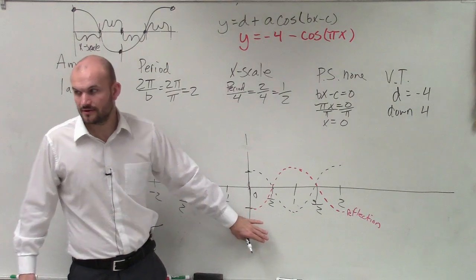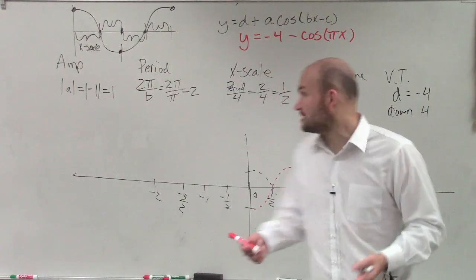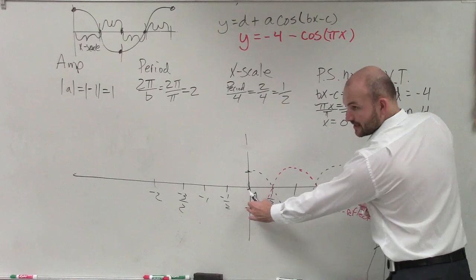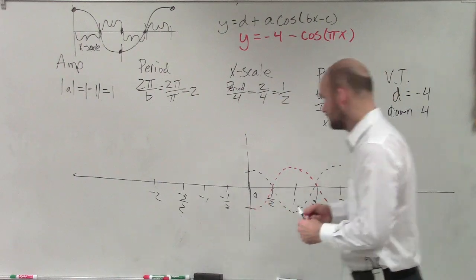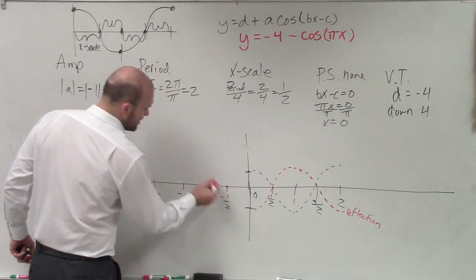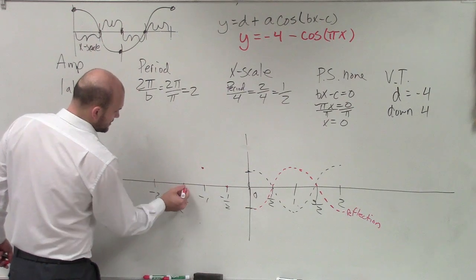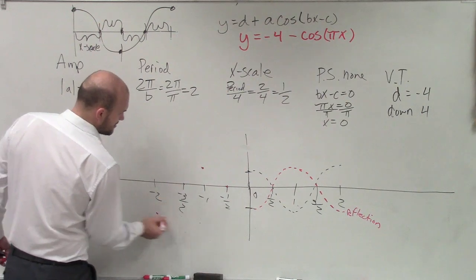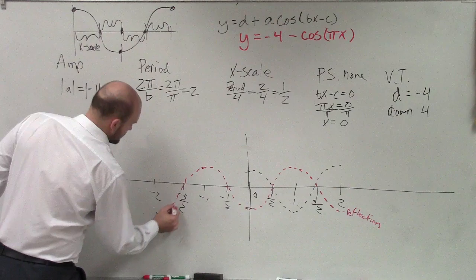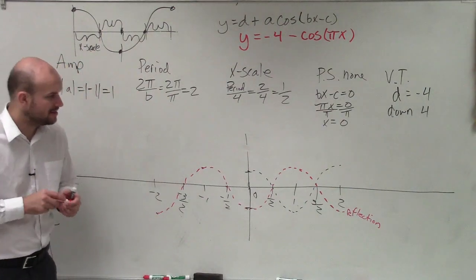Does everybody see what I've done so far? Let's double check — what was our period again? 2. Is that how long it takes for our cycle to go? Yes. So I can continue this in the negative direction: there's going to be a point, a point, a point, a point. Because remember, you have to include two periods.